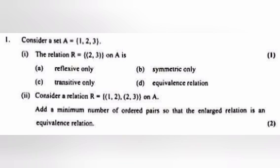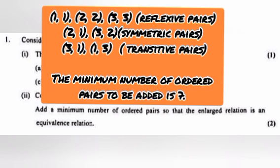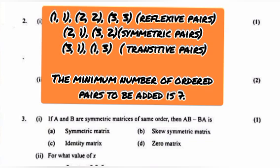Consider a relation R equal to {(1,2), (2,3)} on A. Add a minimum number of ordered pairs so that the enlarged relation is an equivalence relation. Answer: 7 ordered pairs.